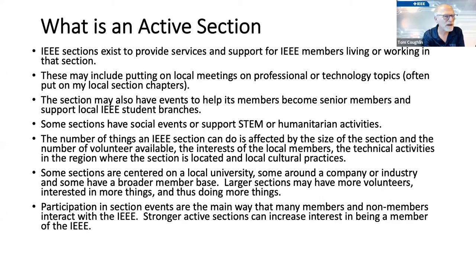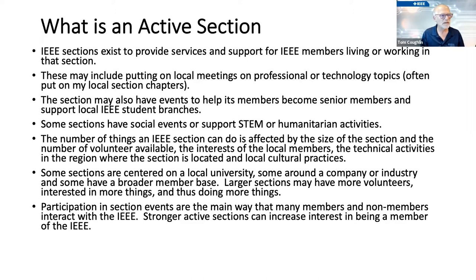The number of things a section can do is affected by the size of the section, number of volunteers available, interests of local members — which may vary by geography — technical activities in the region, and local cultural practices. Some sections are centered on a university, others around industry. Larger sections may have more volunteers and do more activities, but even a small section could be very active. Participation in section events is the main way most members, and especially non-members, interact with IEEE.